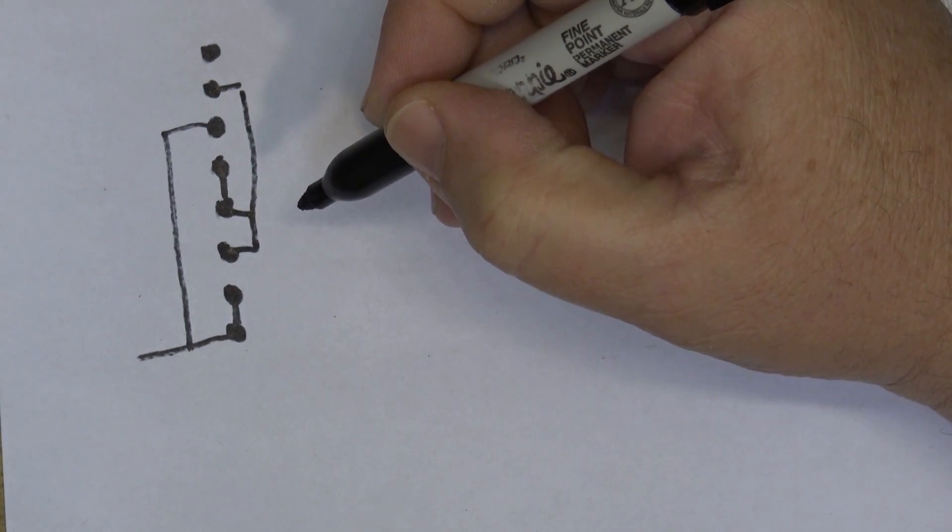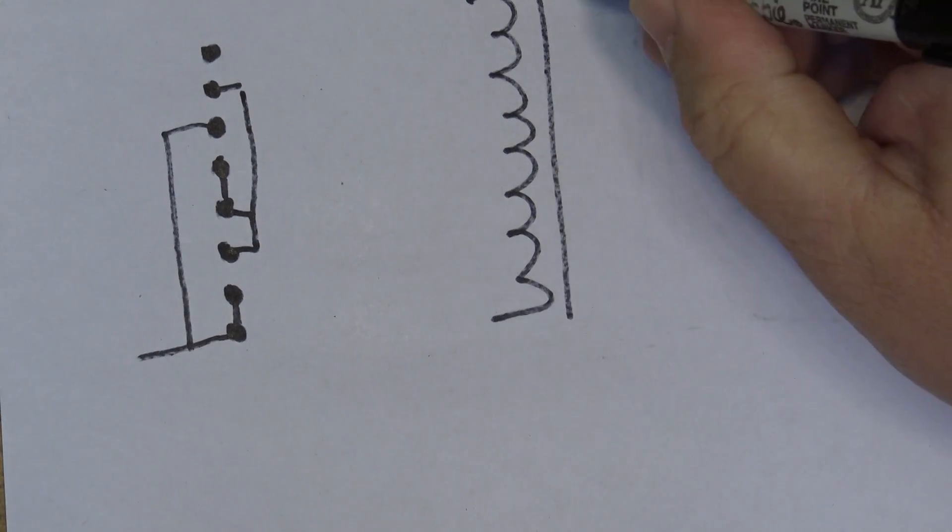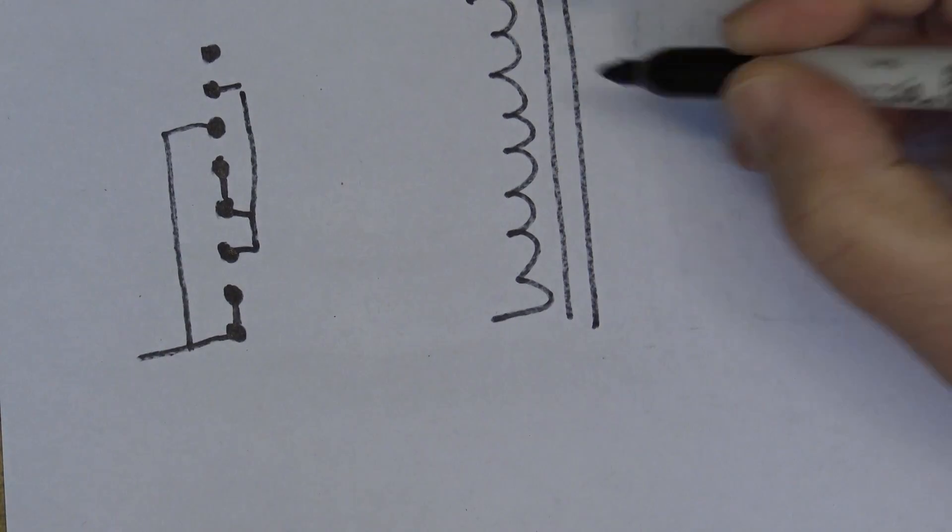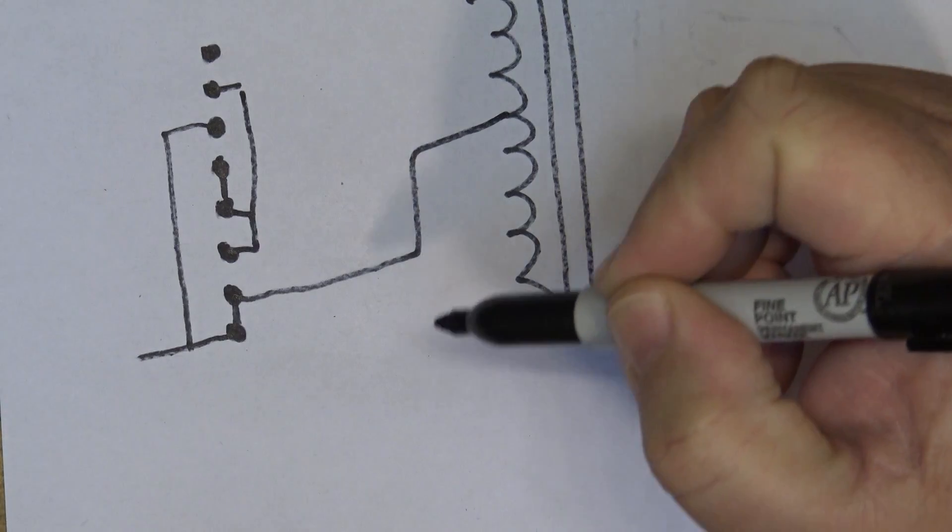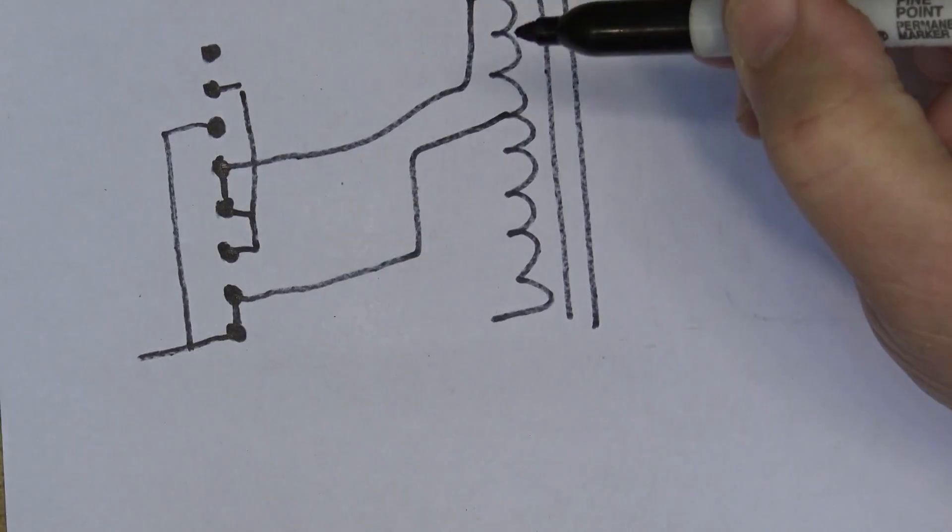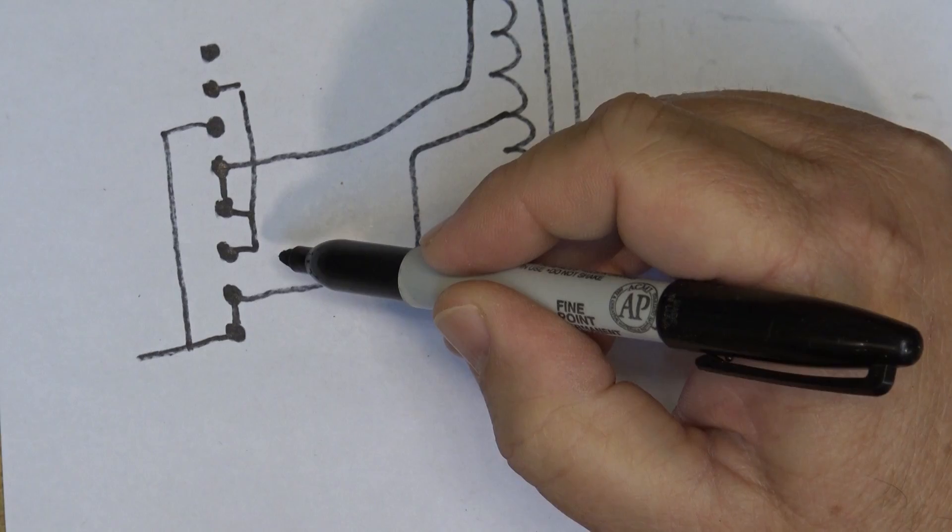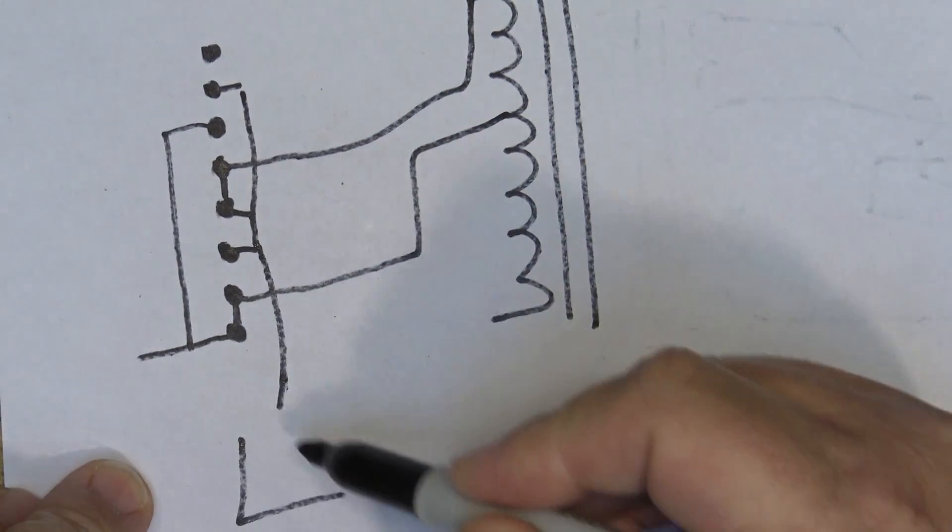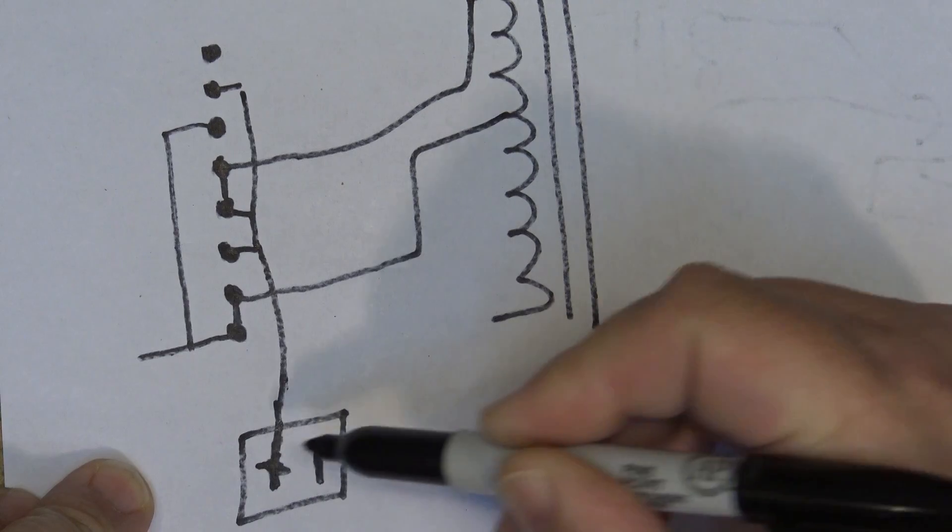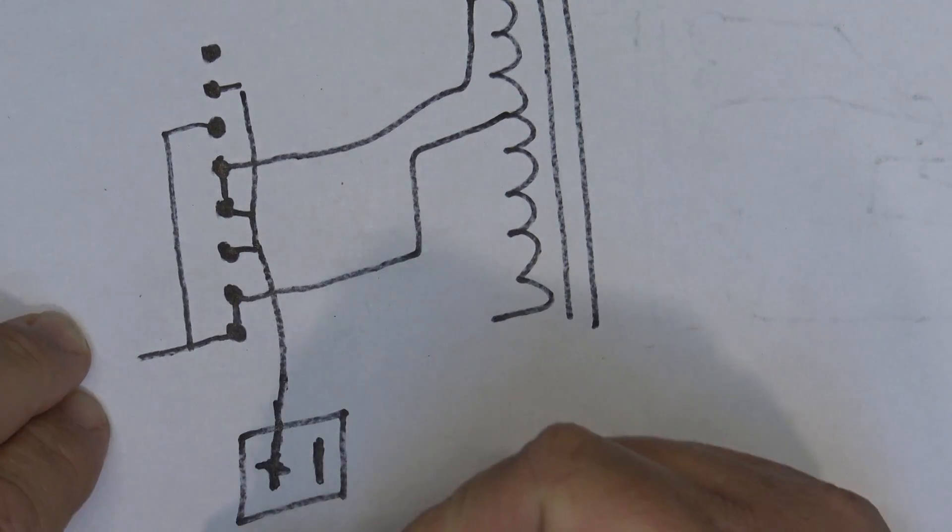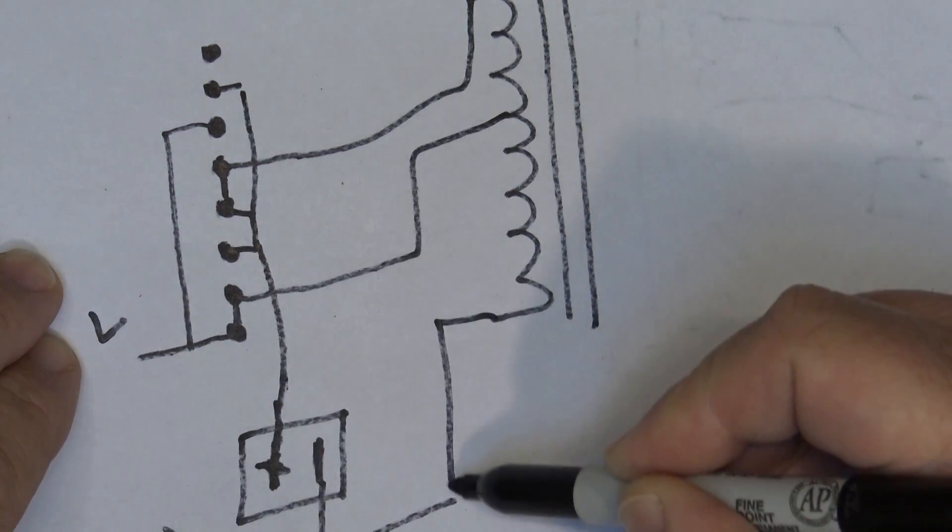The transformer winding is connected to, one winding is connected to that, and the other winding is connected to that side of the switch. Your AC plug is connected here, your AC outlet, and the other side of the line, the neutral side, neutral line and neutral, is also connected to the transformer.